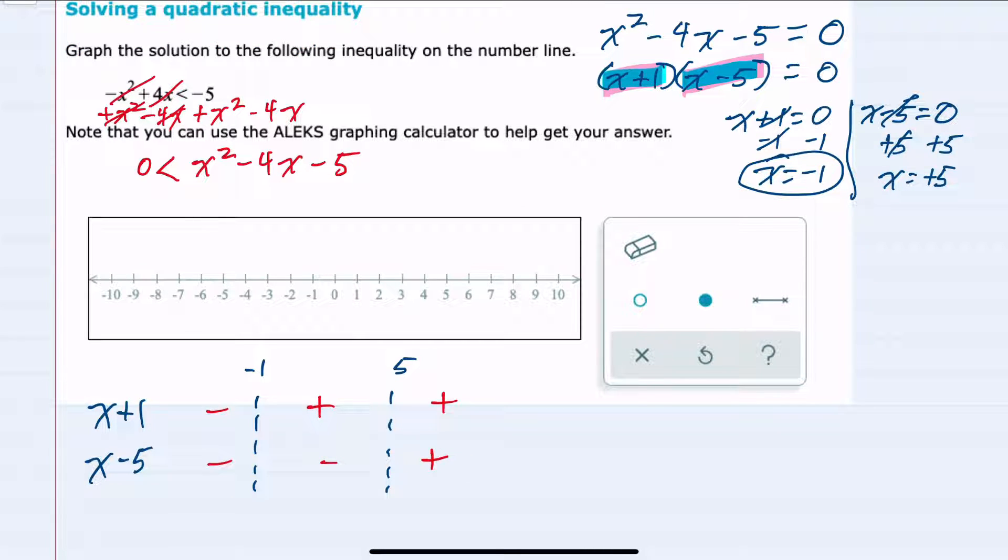...I can see that to the left of negative 1 I have a negative times a negative, which would be positive. Between negative 1 and 5 I would have a positive times a negative, which is negative. And to the right of 5, a positive times a positive is positive.